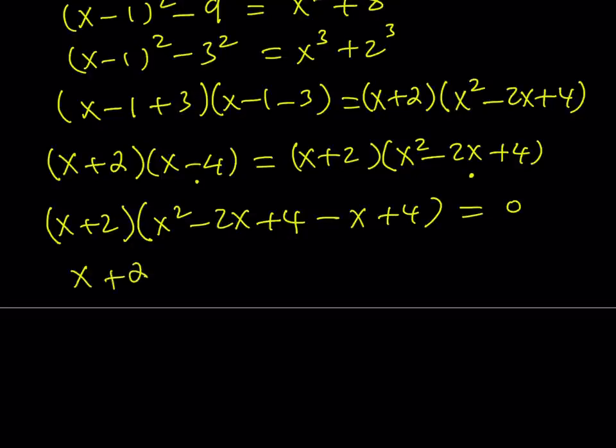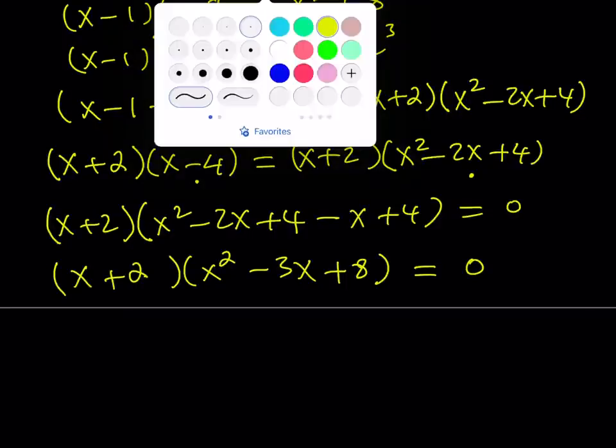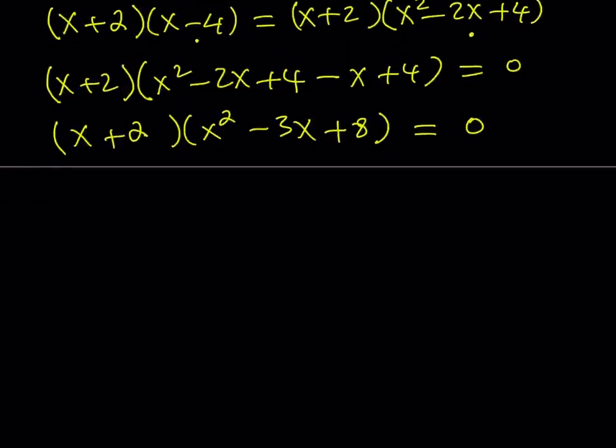I'm getting x plus 2 times x squared minus 3x plus 8 is equal to 0. So now this equation is easily solvable because it is factored. In the factored form we can basically set each factor equal to 0.